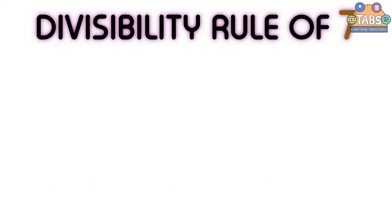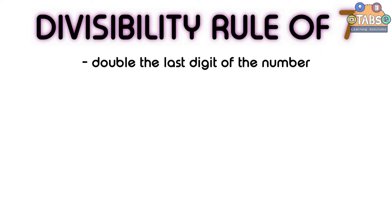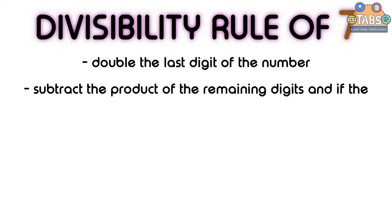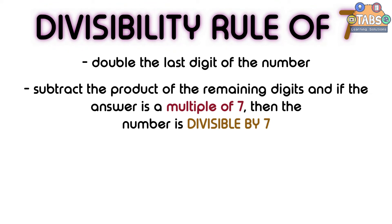Now let us go to the Divisibility Rule of 7. To check whether a number is divisible by 7, we should know the two steps. The first step is we need to double the last digit of the number, and the second step is we need to subtract the product from the remaining digits, and if the answer is a multiple of 7, then the number is divisible by 7.